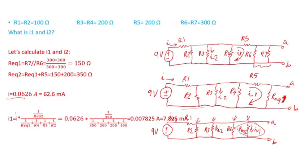Notice I do not include R1 in the current division because R1 is not in parallel — current I flows through R1 and does not divide. Carrying out the math, I1 equals 0.007825 amps, or 7.825 milliamps.